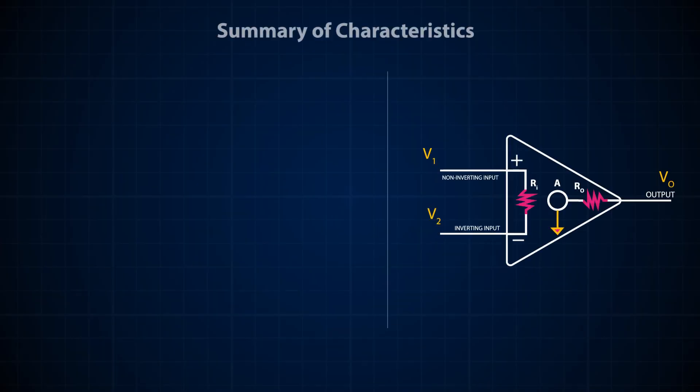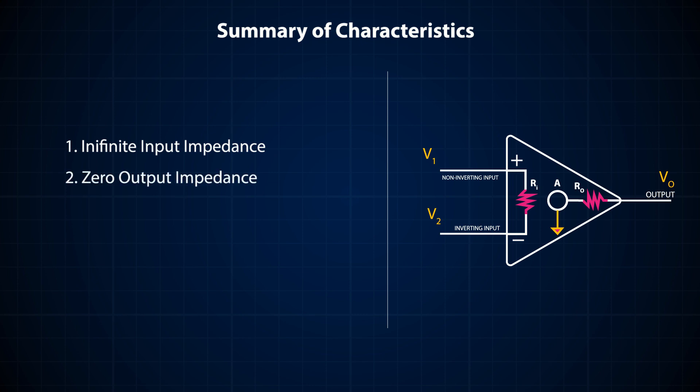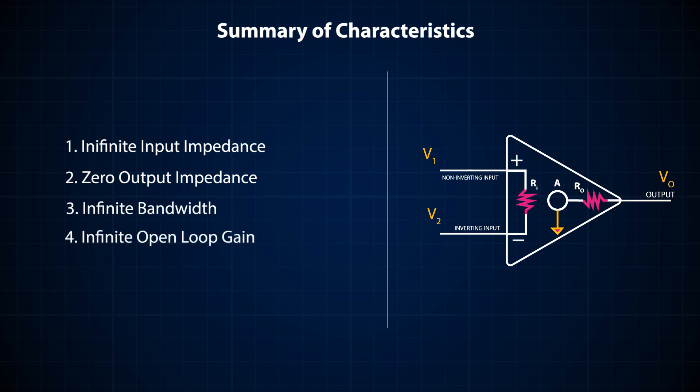Here is a summary of the characteristics of the ideal op-amp. First, it must have an infinite input impedance. Second, the output impedance must be zero. Third, it must have an infinite bandwidth. And fourth, it must have an infinite open loop gain. Note that the bandwidth of an amplifier can be affected by introducing components that vary current and voltage with frequency.